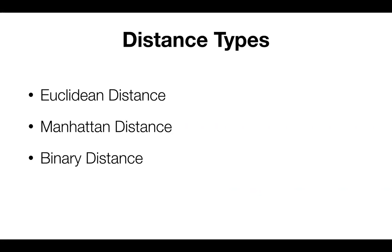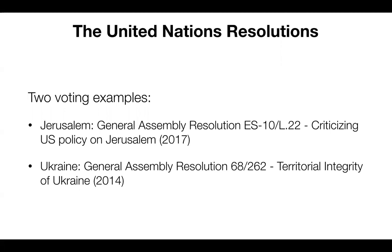The three types are Euclidean, Manhattan, and binary. So let's start with the Euclidean distance. To explain it, let's use some examples.